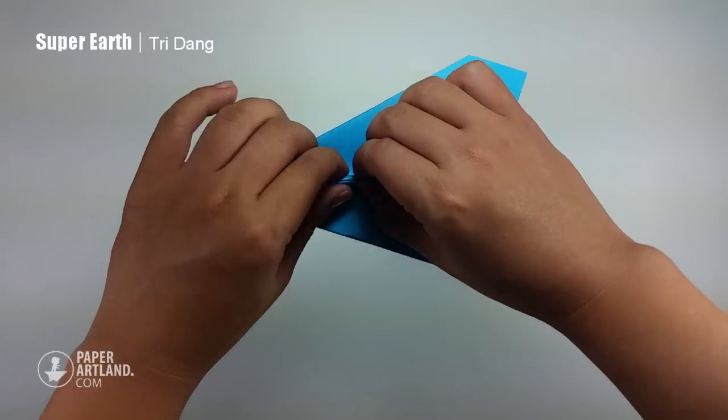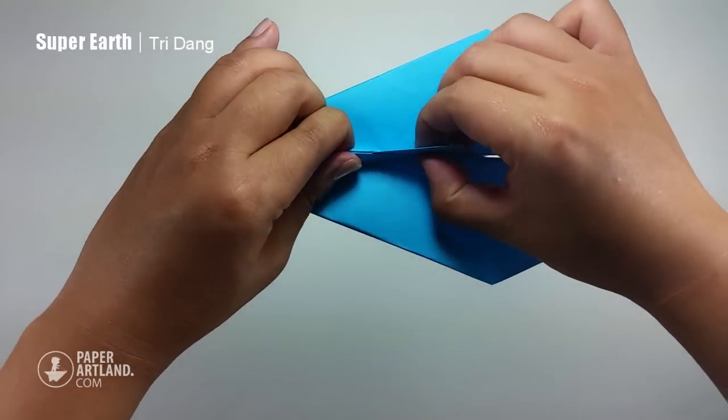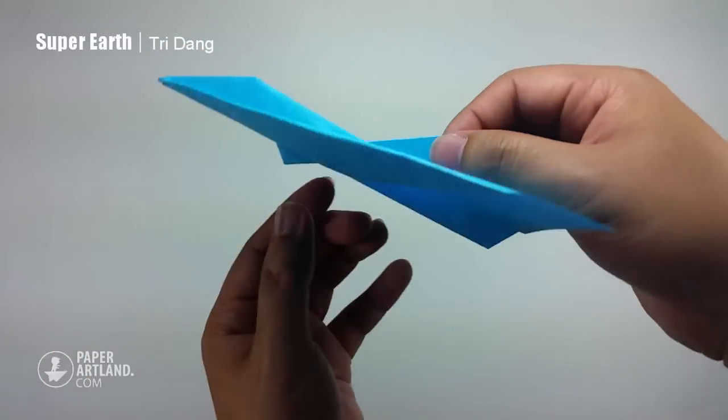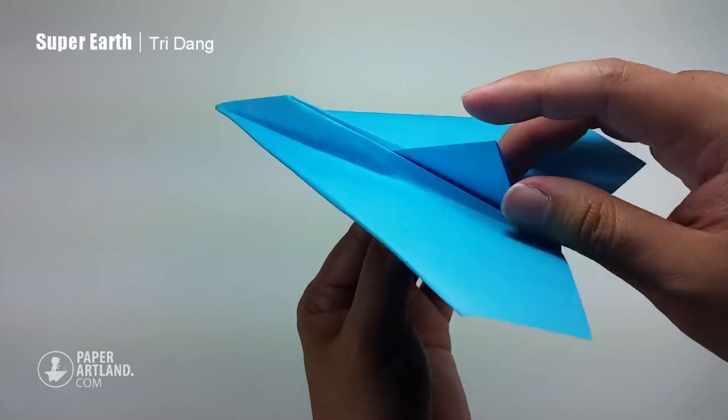And now I open the wings. You can see the stabilizer is up now. Next step, I will stylize the stabilizer to make it fly better.